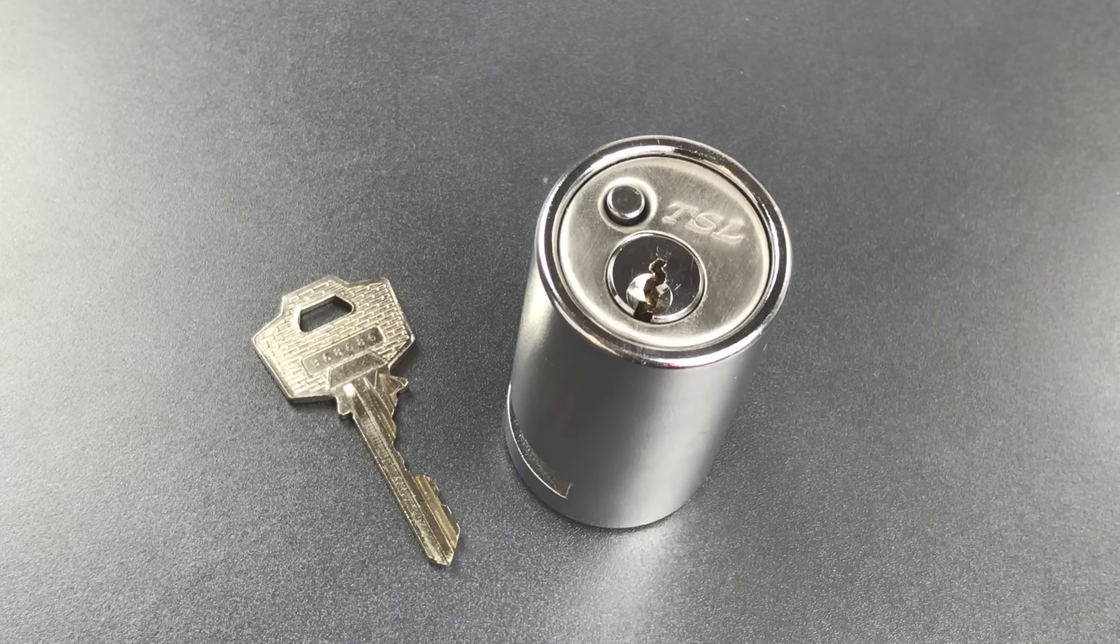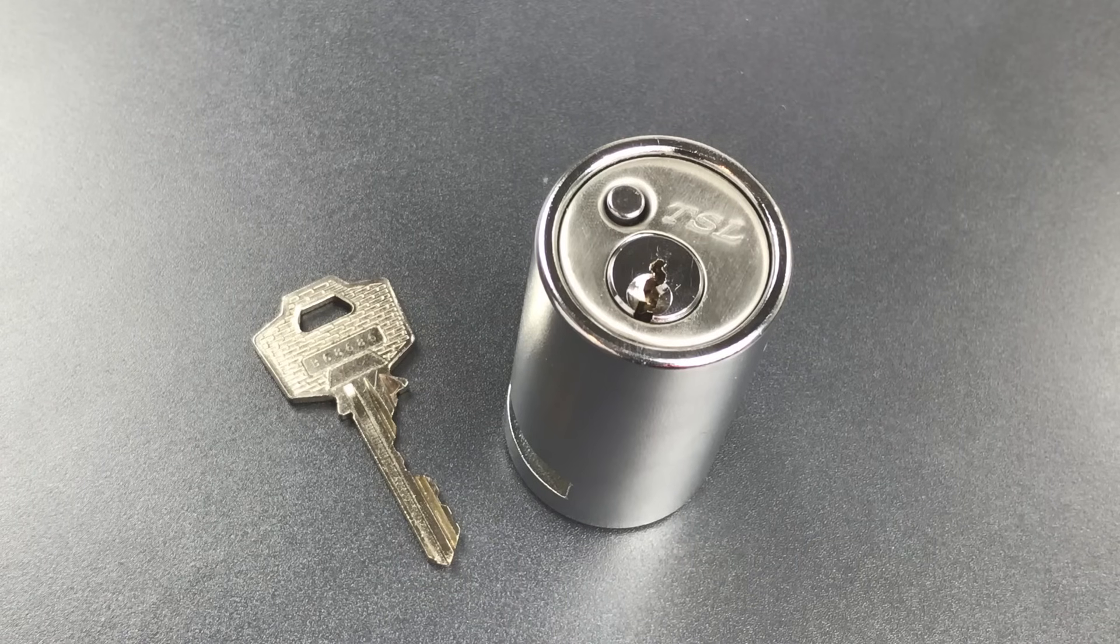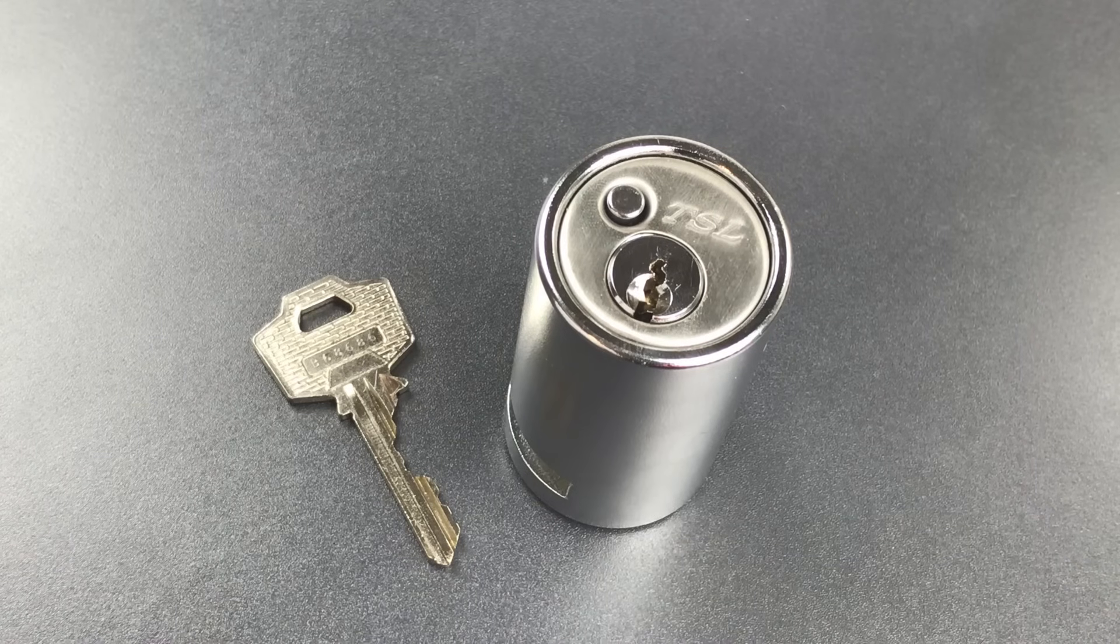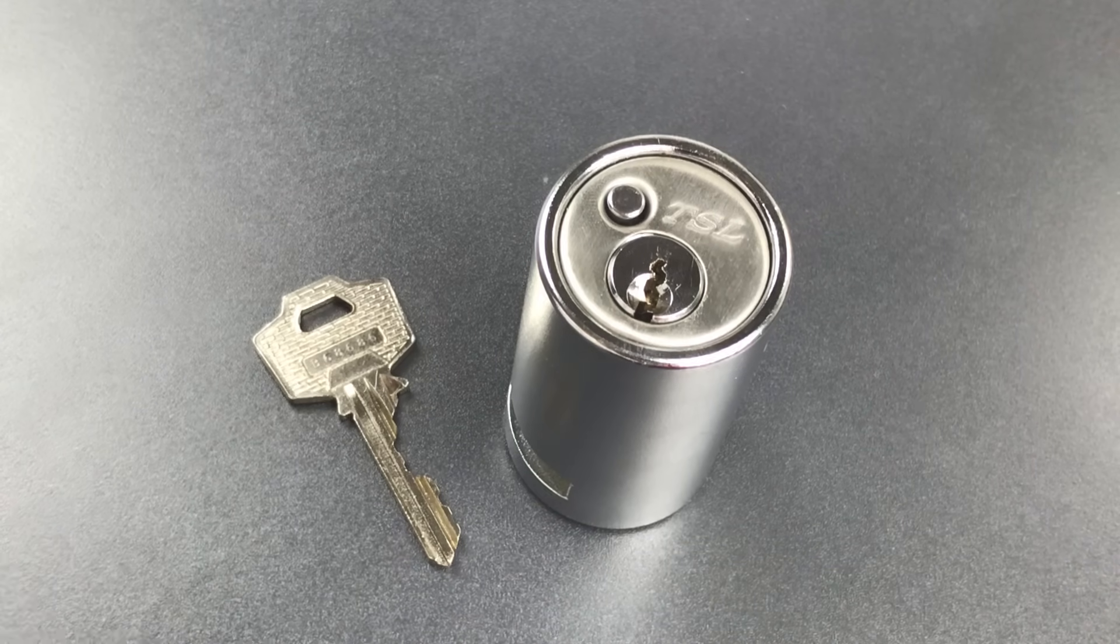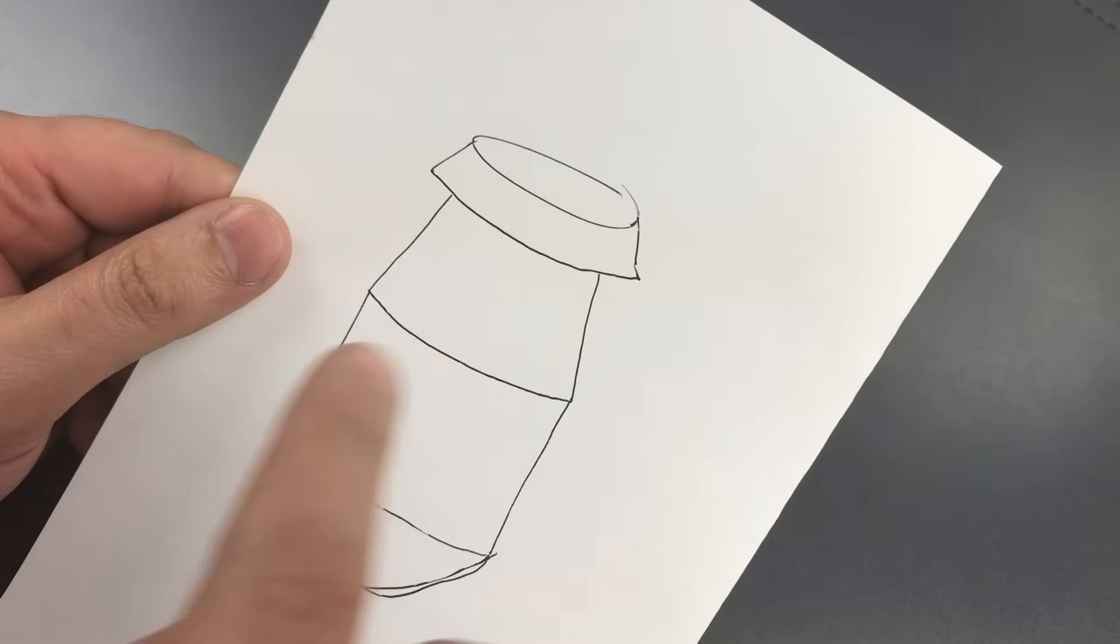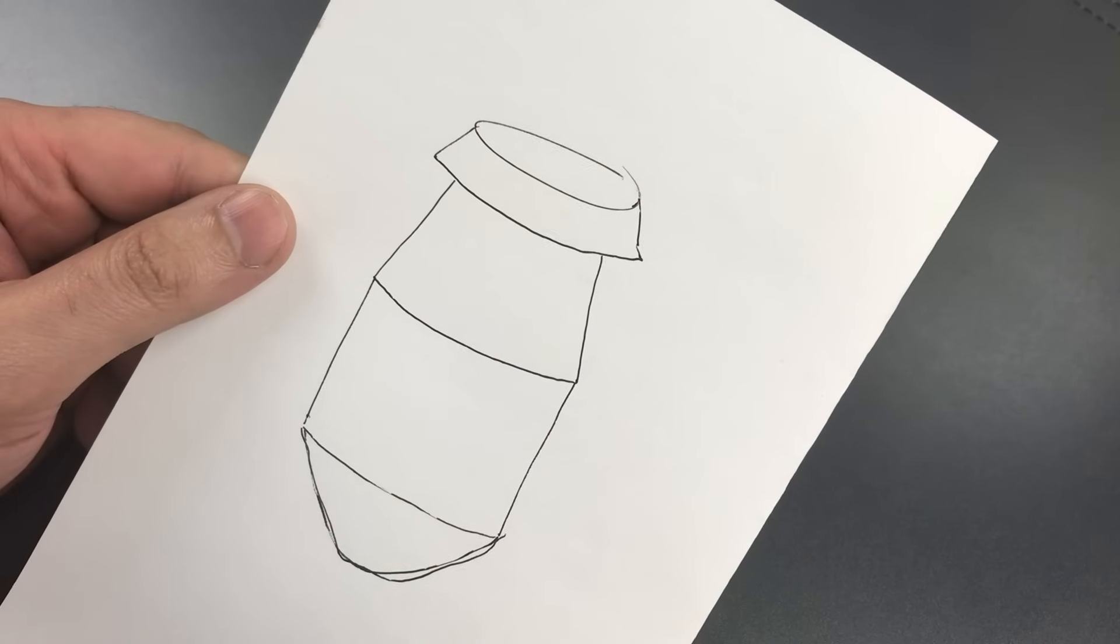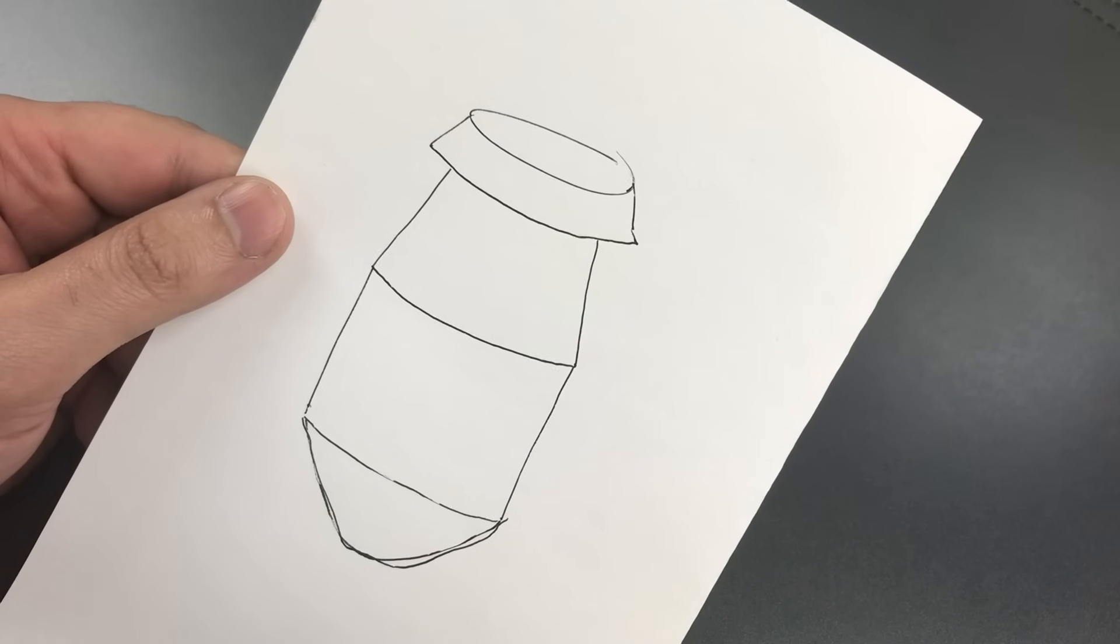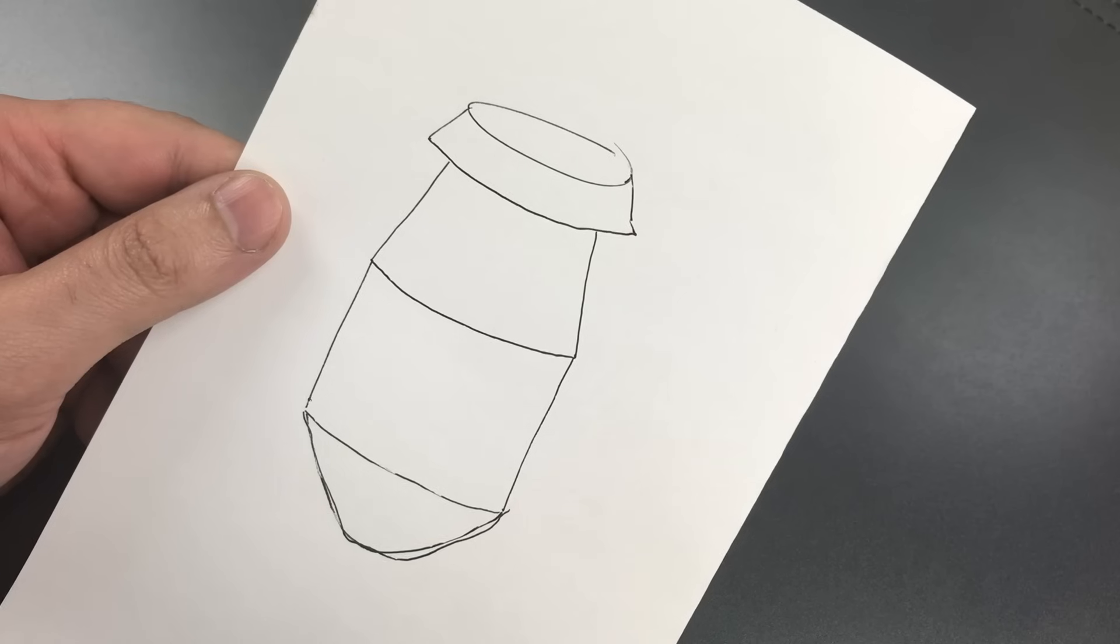I probably should have realized this earlier, because they're shaped exactly like I used to shape keypins back when I used to make challenge locks. I actually drew a picture here. The beveled portion up on top does two things. First, it gets stuck in the shear line, and second, it induces counter-rotation when you probe a set pin.